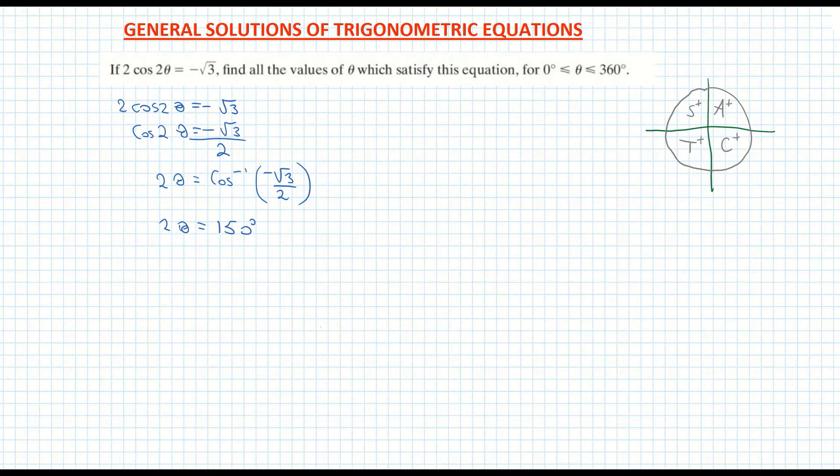Now we have a separate video on the unit circle so maybe check that out in more detail. And I'm just writing in my angle so I have 0 degrees, 90 degrees, 180 degrees and 270 degrees. So I'm going to need that now.